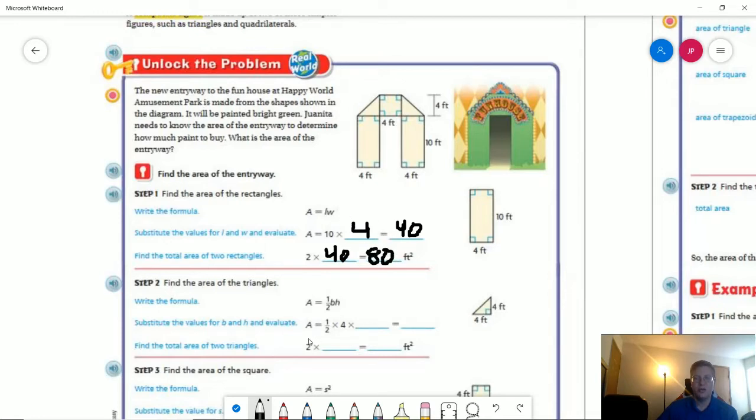Now we are going to work on the triangle. So we have 4 by 4. So we are going to do 4 times 4 times 1 half. So that is going to give us 16 times 1 half equals 8. We again have two of those triangles, one here, one here, and that is going to give us 16.